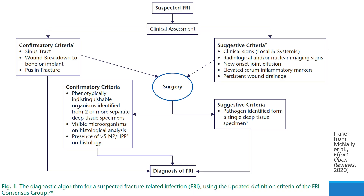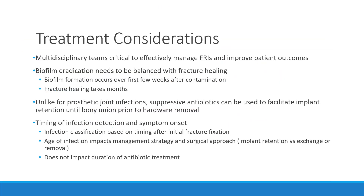In your previous talk, you went over how to diagnose fracture-related infection, what the criteria were, and this talk really is the next step. Once you do have a diagnosis of a FRI, what do you do?